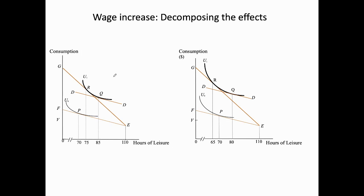Using this diagram we want to decompose the two effects, starting with the left side diagram. The original position starts with budget line EF and indifference curve U0, where point P is the original tangential point. When there is an increase in the wage rate from $10 to $20, there is a rotation on the endowment point E, the budget constraint becomes steeper, and we have a new tangential point given by point R.